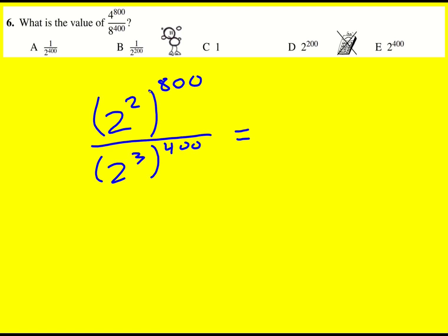Using the third rule of indices, we just times these two numbers together: 2 to the 1,600 divided by 2 to the 1,200, which means I can then subtract the two powers, giving 2 to the power of 400.